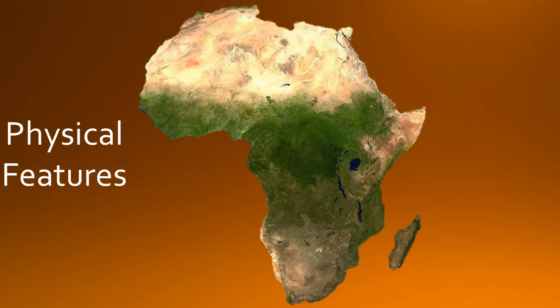Next are the physical features of Africa. First up are the Atlas Mountains. They are a mountain chain located in northwest Africa and they go through the countries of Morocco, Tunisia, and Algeria.